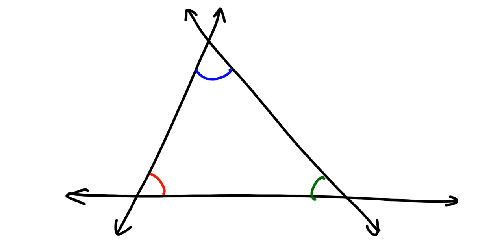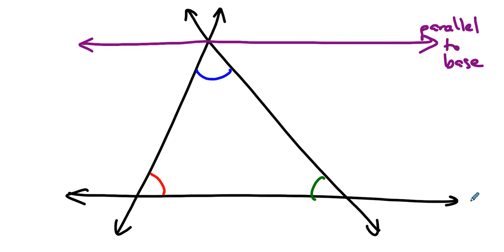And the way we do this is we draw a purple line through one of the vertices of the triangle. And it's not just any purple line. This purple line is parallel to the base. It's parallel to this black line. And once the purple line is parallel to the black line, then some really interesting things happen.